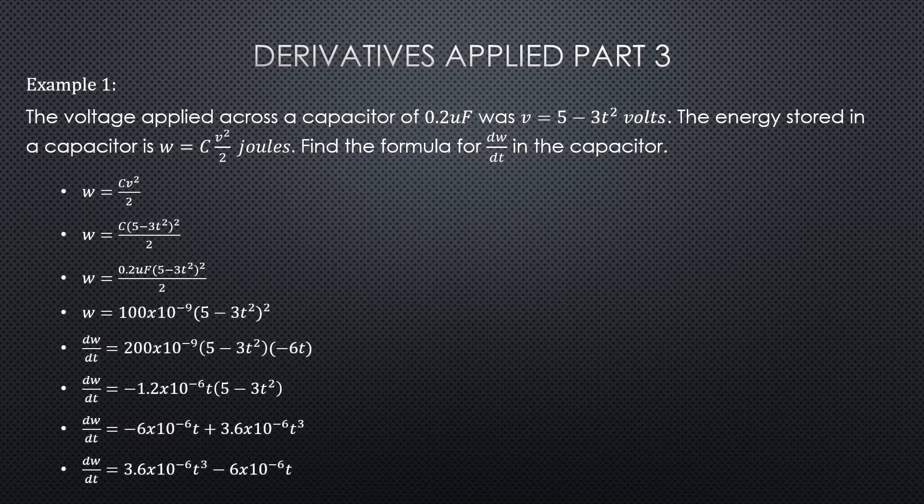So we're going to substitute out the V for 5 minus 3t². That gives us the second bullet there. Now we're going to substitute the C for the capacitance that was given, 0.2 microfarads. Now we can divide that 2 into the 0.2 microfarads and get rid of the fraction.